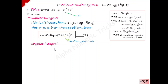Now we find the singular integral. To do so, differentiate the complete integral with respect to each arbitrary constant and set those derivatives equal to zero: ∂z/∂a = 0 and ∂z/∂b = 0. Using these conditions, we eliminate the arbitrary constants. Note that for Clairaut's form problems, the singular integral always exists, though the calculation is somewhat lengthy.